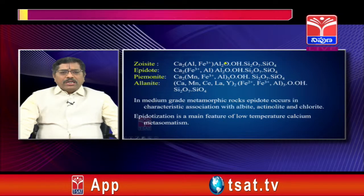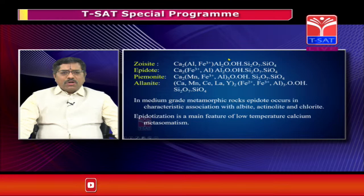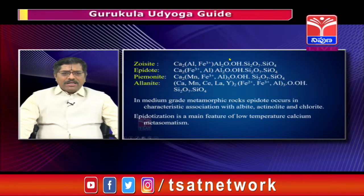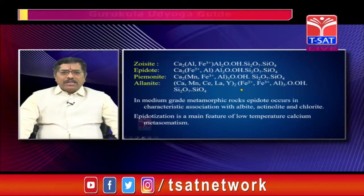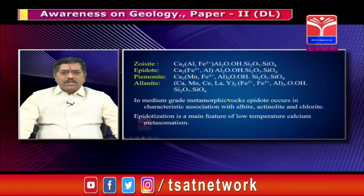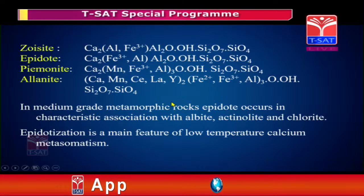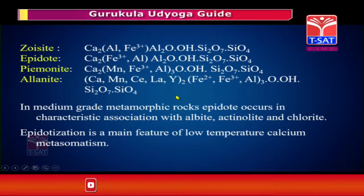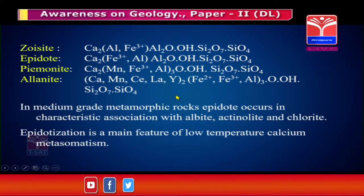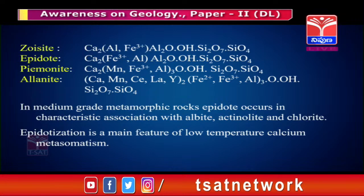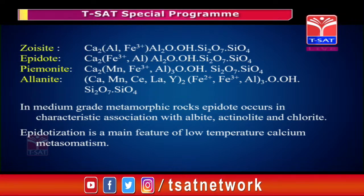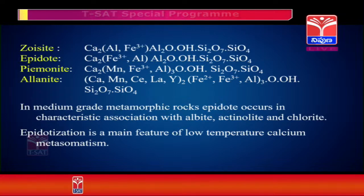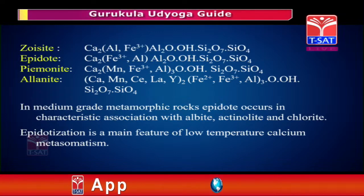For the epidote group of minerals, there are zoisite, epidote, piemontite, and allanite. A characteristic association is: epidote occurs with albite, actinolite, and chlorite. This is very important in the greenschist facies of metamorphism. Wherever there is calcium metasomatism, epidotization is the main important feature, which is a low-temperature feature.